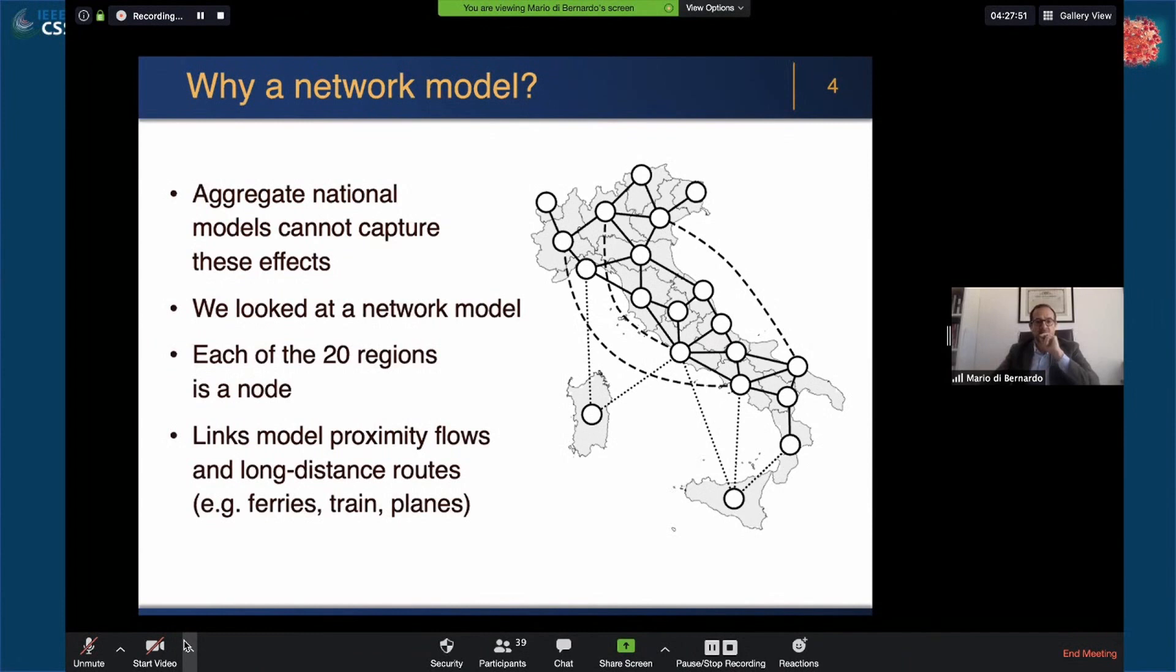The idea is to model the country as a network that you see here on the right, as a network of 20 regions interconnected by short proximity flows, maybe because of commuter flows between neighboring regions or even longer flows and traffic. You see some major ferry routes between the island regions and the Italian continent. We're trying to capture all these aspects into a network model of the epidemic spread in Italy.